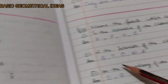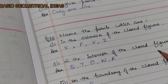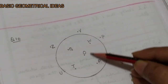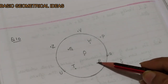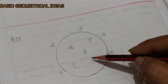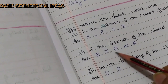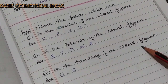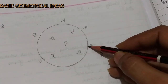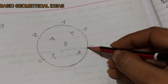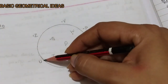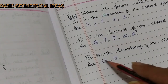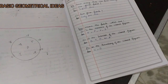Interior means inside the closed figure. The points Q, W, O, T, and R are lying inside the closed figure, so they are the interior points. For the boundary of the closed figure — these are points lying exactly on the boundary line. Only two points lie on the boundary: U and S. So the boundary points are U and S. I hope you have understood all these questions.